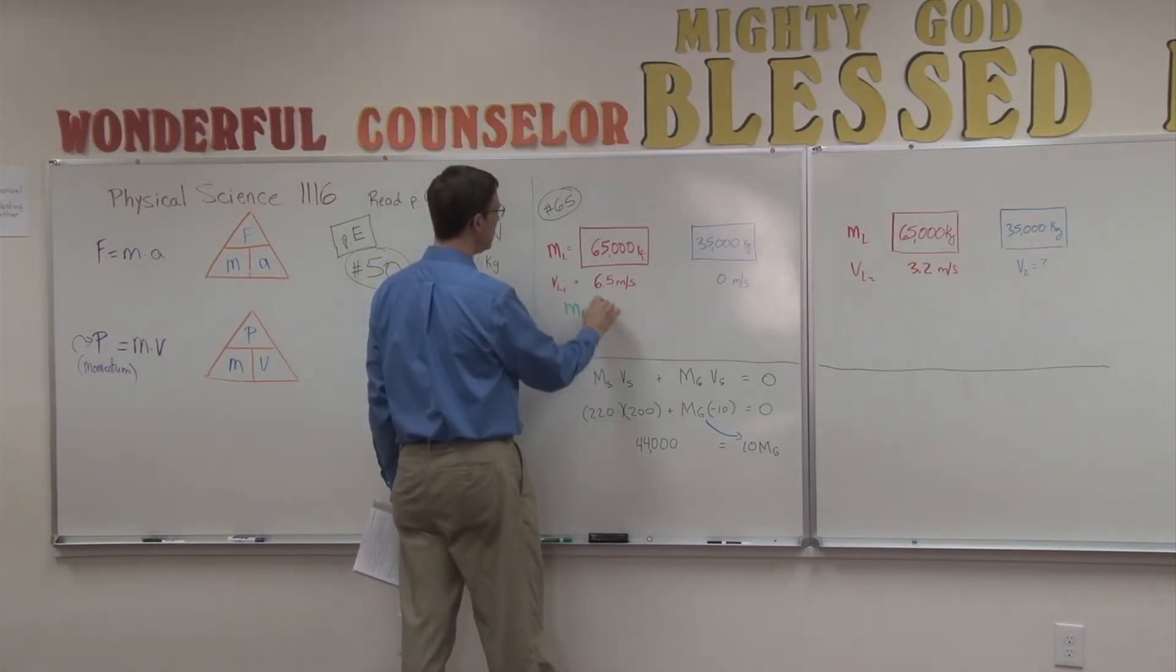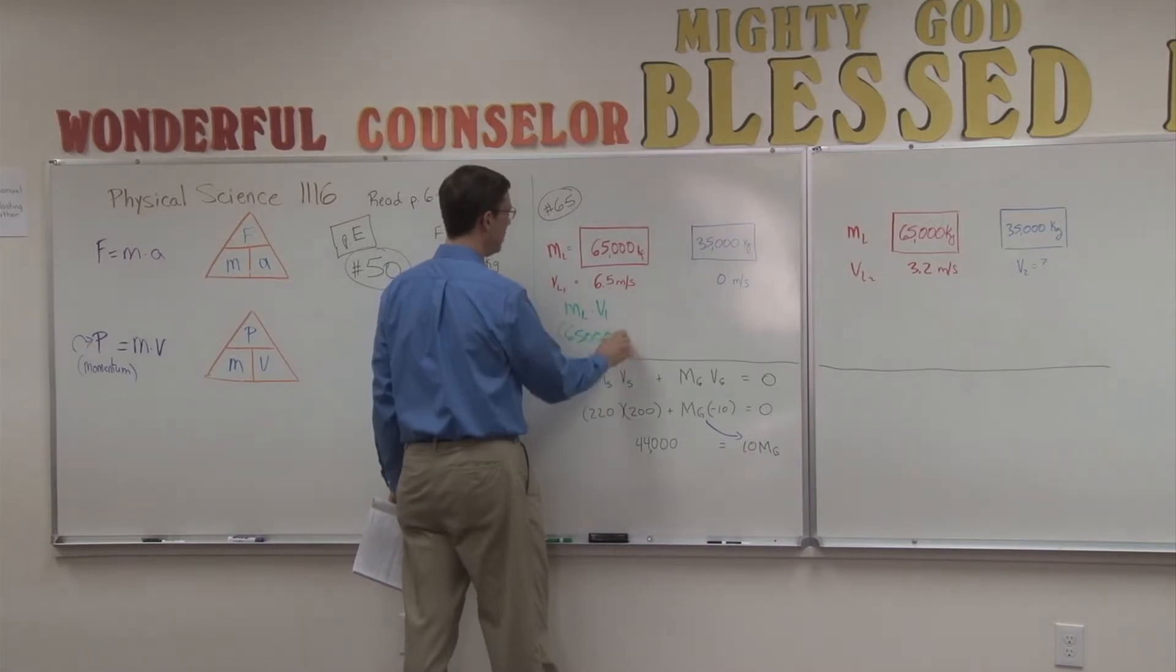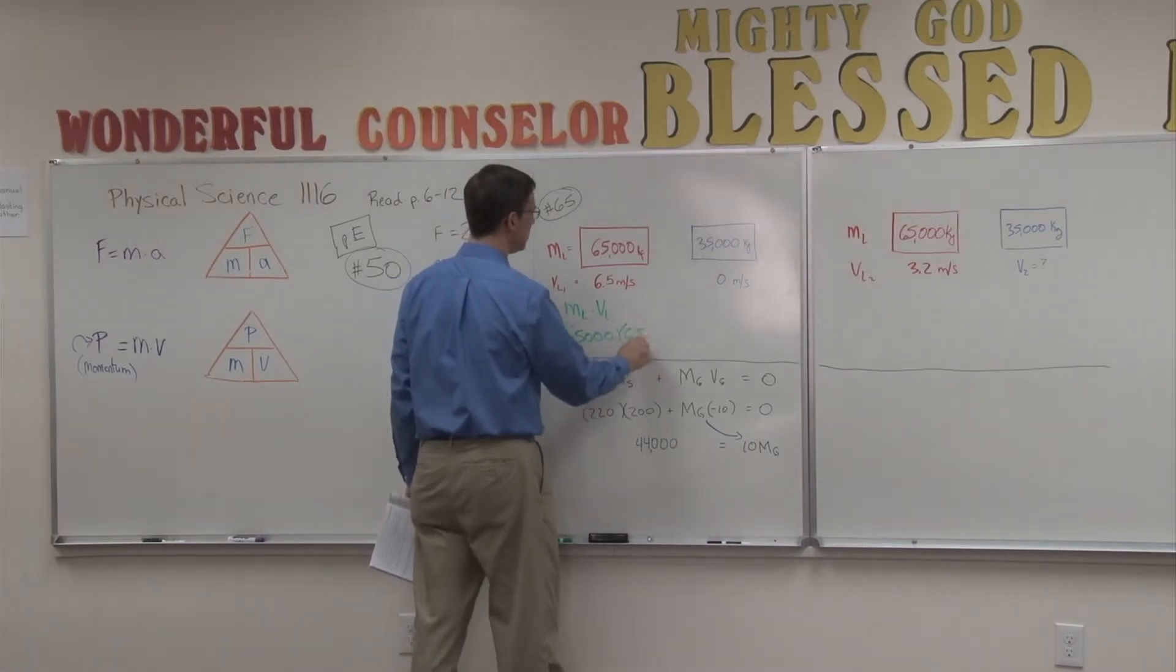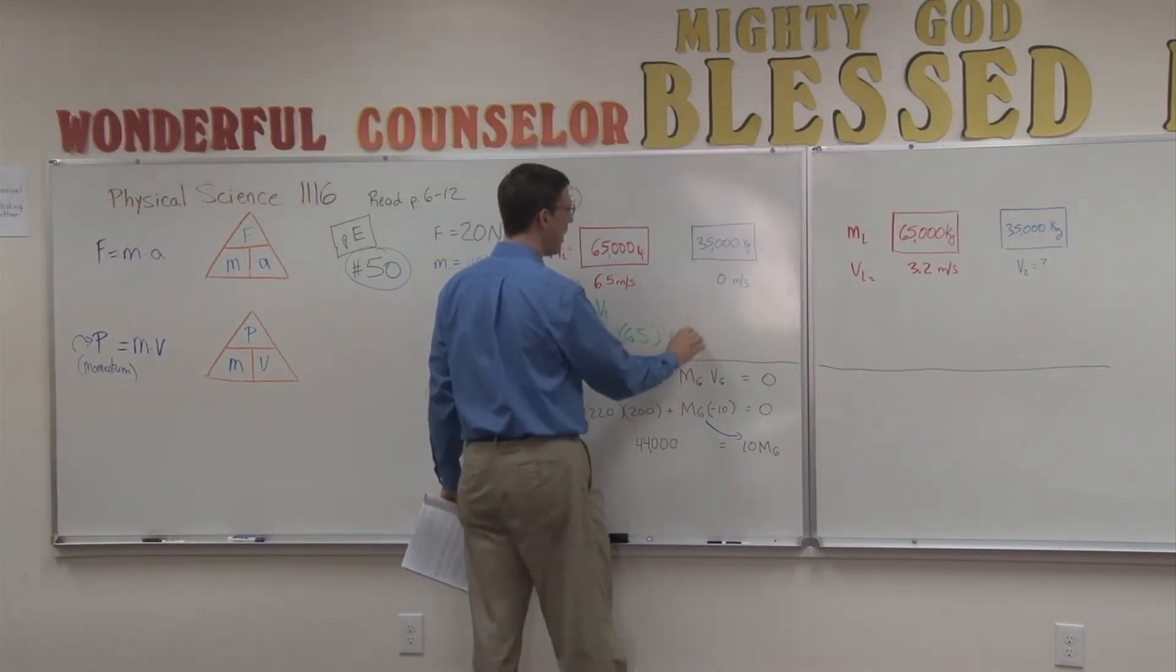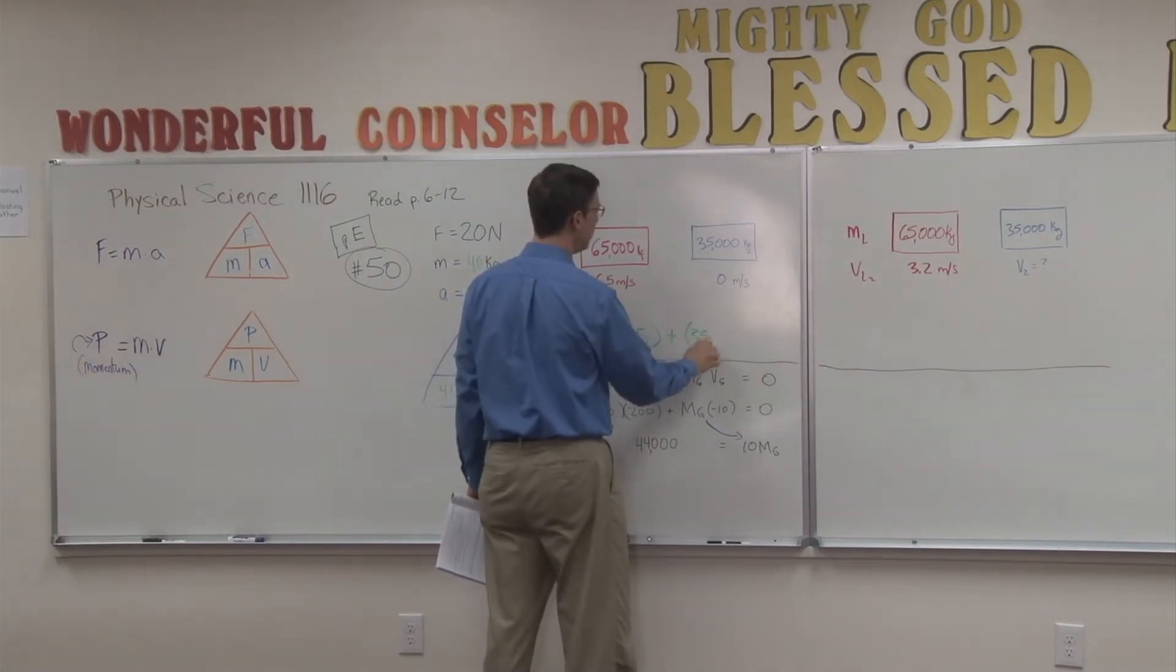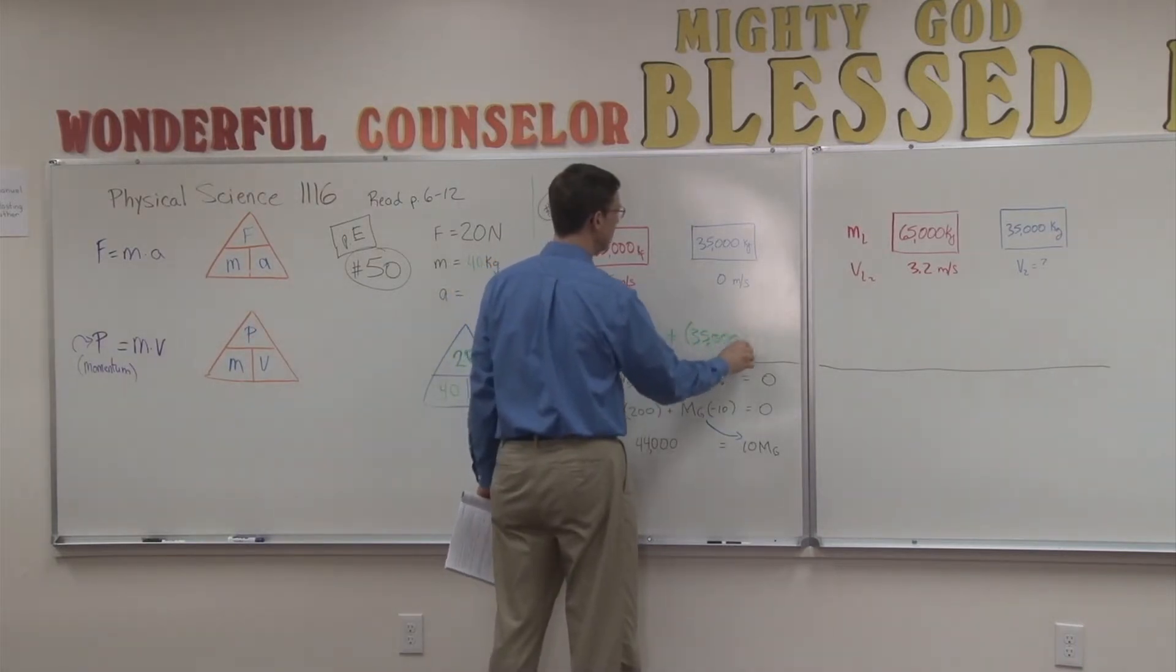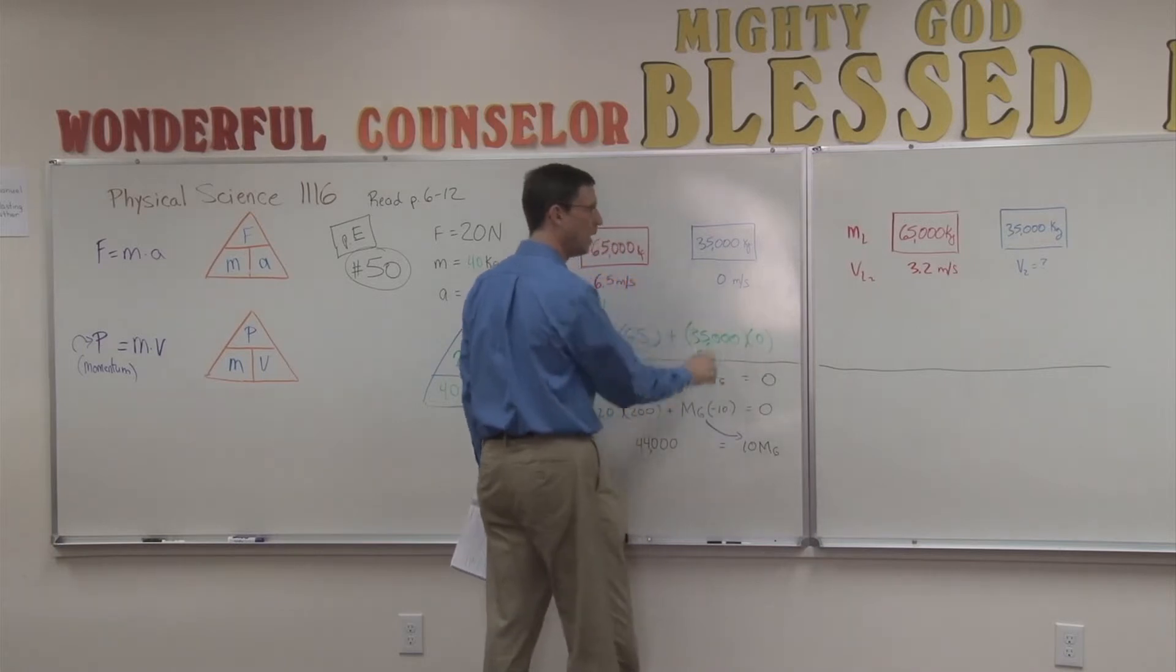So let's see what the total momentum of this system is before the collision. We're going to take this m, mass of the fully loaded, times the velocity of the fully loaded, so 65,000 times 6.5.